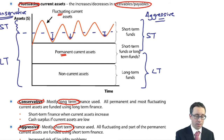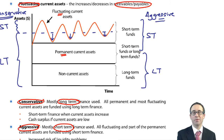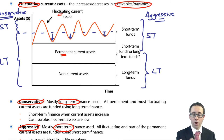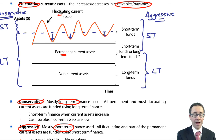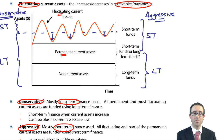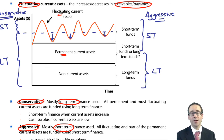It also mentions a moderate policy — essentially in between conservative and aggressive. Long-term finance still funds all non-current assets, but maybe a little more of the permanent current assets than with an aggressive policy. For objective test questions, ensure you understand what is meant by a conservative working capital financing policy (mostly long-term finance) versus aggressive (mostly short-term finance, increased liquidity risk). That's working capital as an introduction — covering the financing aspect and the policies we have. In the next session we'll start looking at how we begin to measure it.